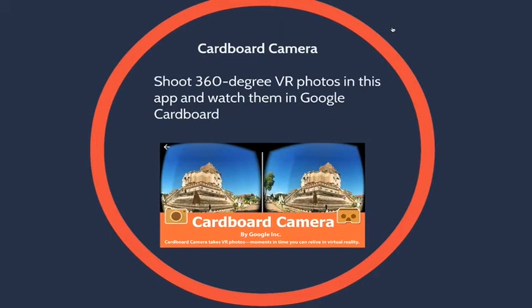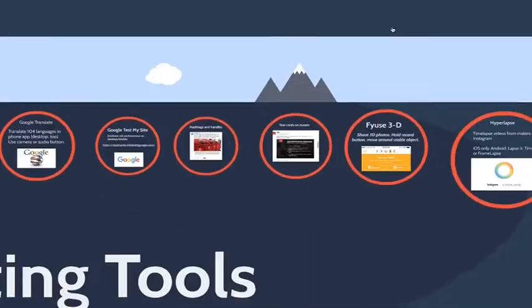Cardboard Camera is one of my favorites — you shoot 360-degree panorama photos and drop them into your Google Cardboard, where you can look around in 360 degrees. It's been out since summer 2016 and is a quick, clean way to capture 360 panoramas. You can shoot vertically and there's a little arrow that directs you which way to pirouette as you capture the scene.